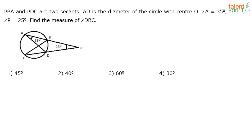You can see the figure is given, which means half of the problem is solved because we usually spend a lot of time drawing the figure itself. So you can see there is a circle where PBA and PDC are the two secants — a line from an external point which cuts the circle at two points.